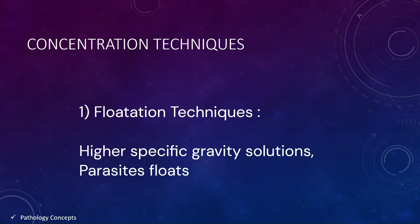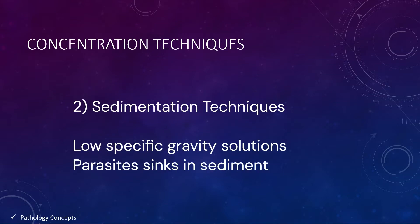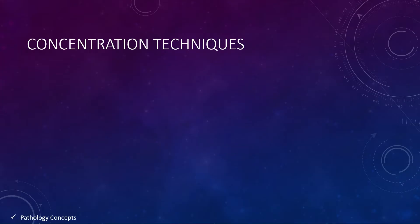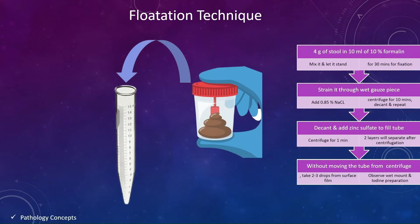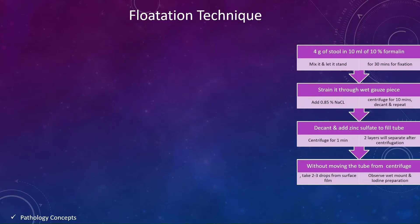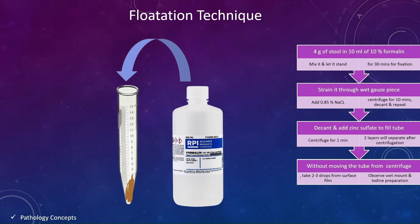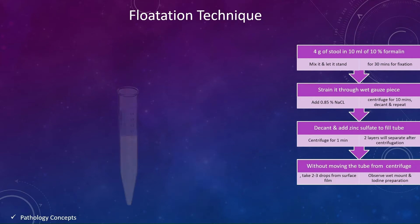Sedimentation technique uses solutions of lower specific gravity than the parasitic organism, thus concentrating the latter in the sediment. They are easier to perform, and it is the formalin ethyl acetate technique. Now let's learn one by one. First is the flotation technique: take 4 grams of stool in 10 ml of 10% formalin, mix it.